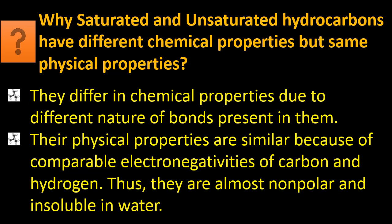Saturated and unsaturated hydrocarbons differ in chemical properties due to the nature of bonds present in them — saturated hydrocarbons have single bonds while unsaturated hydrocarbons have double or triple bonds. However, their physical properties are similar because of comparable electronegativities of carbon and hydrogen, making them almost non-polar and insoluble in water.